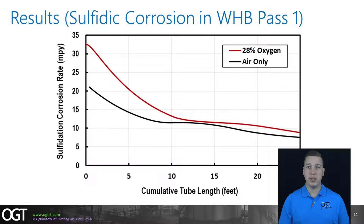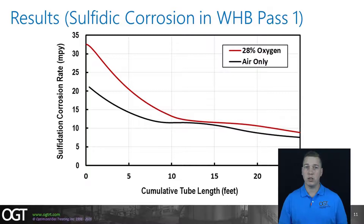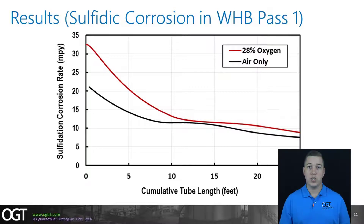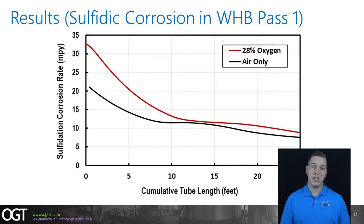This next graph shows the same two cases — base case air-only versus 28% oxygen enrichment — but this time looking at sulfidation corrosion rates in mils per year along the length of the boiler tubes. It becomes even more apparent that something is going on with this particular waste heat boiler. The peak corrosion rate for base case air-only operations is around 21 mils per year based on the Cooper-Gorman curves — already twice the recommended maximum corrosion rate of 10 mils per year. As oxygen enrichment is added, this problem is compounded, pushing the corrosion rate up to 33 mils per year — three times the recommended limit. This represents a 50% increase in corrosion rate just by adding low-level oxygen enrichment to an already borderline plant.